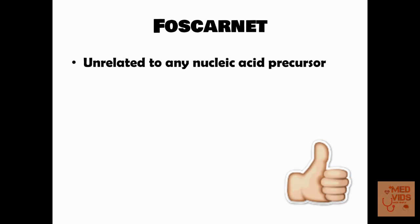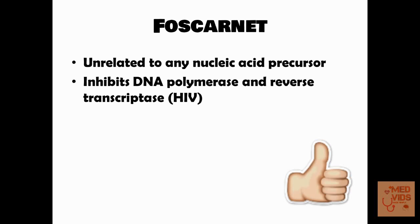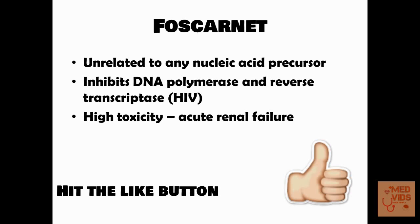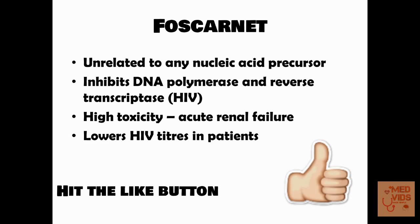Foscarnet is another drug not related to any nucleic acid precursor, unlike the previous drugs. It inhibits DNA polymerase in herpes viruses and also inhibits reverse transcriptase in HIV virus. It can cause high toxicity, the most severe being acute renal failure. It can also lower HIV titers in HIV patients — for example, in an HIV-infected patient who acquires cytomegalovirus infection, foscarnet can lower both the cytomegalovirus infection and the HIV titers.